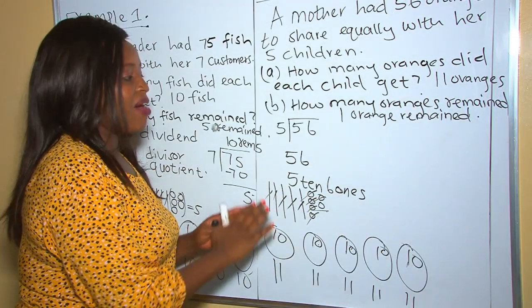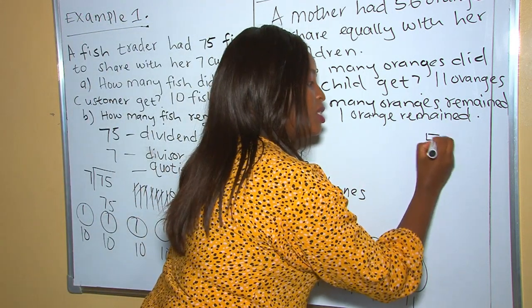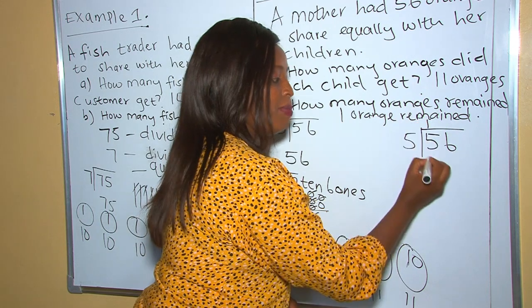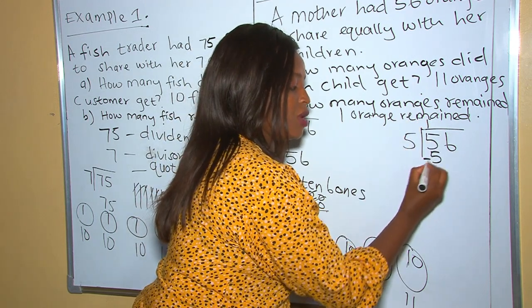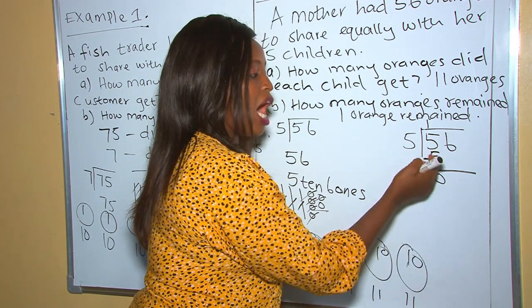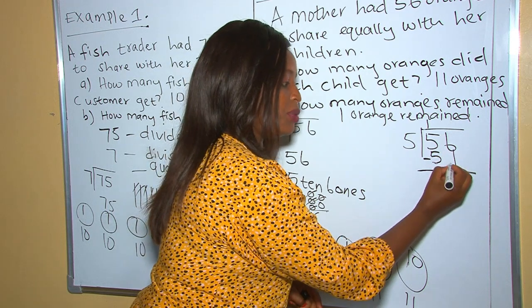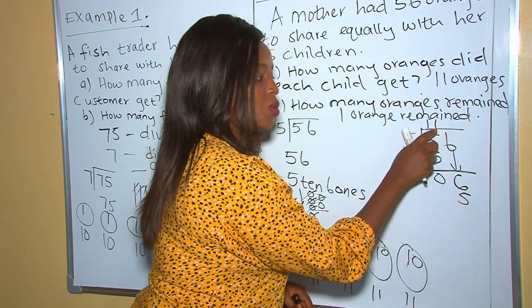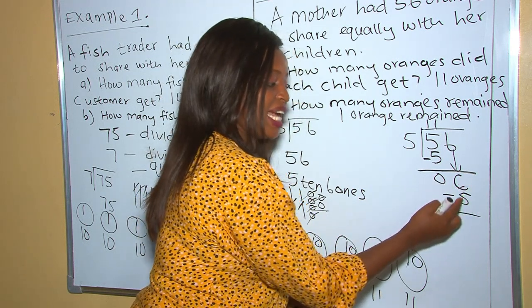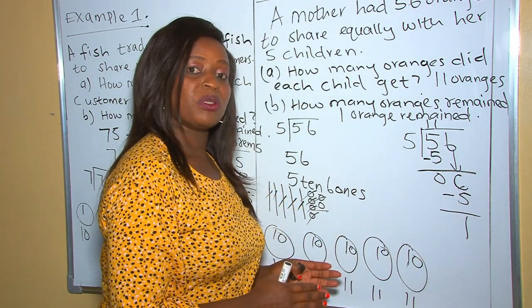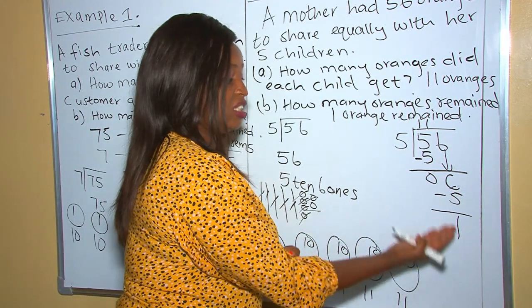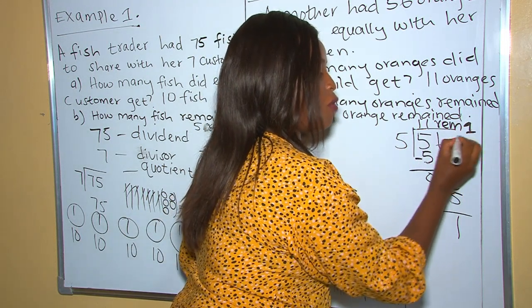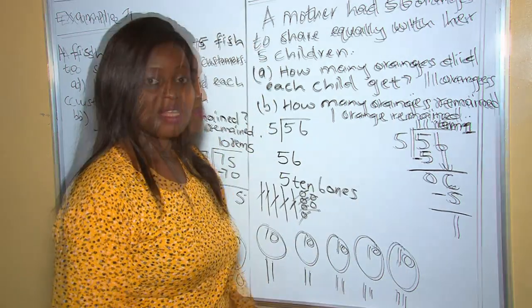Now let's do long division: 56 divided by 5. Five divided by 5 is 1, because 1 times 5 is 5. When you take away, 5 minus 5 is 0. We are done with the tens. Now we bring down the ones: 6 ones divided by 5 is 1, since 1 times 5 is 5. When you take away 6 minus 5, you get 1. One orange can't divide among 5 children, so this is our remainder. We write remainder 1, abbreviated as rem 1. That is our answer.